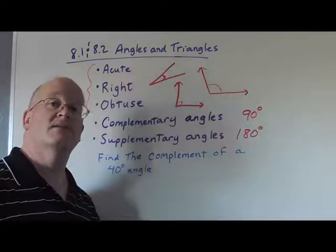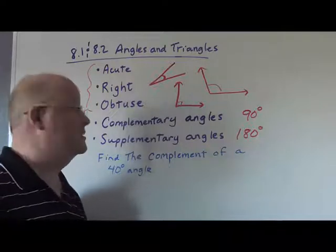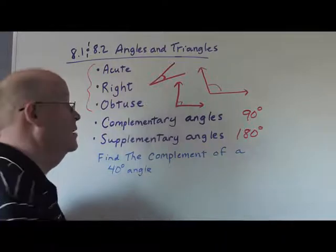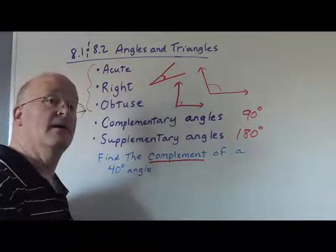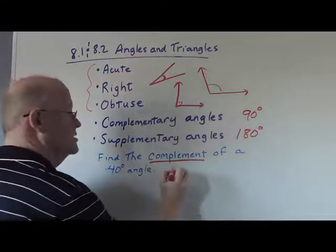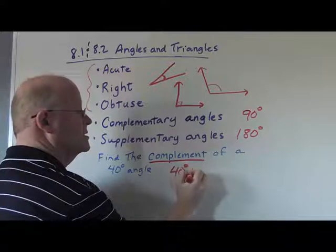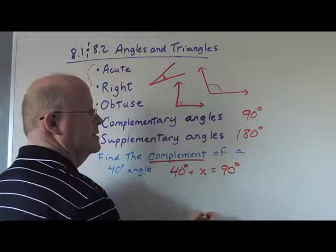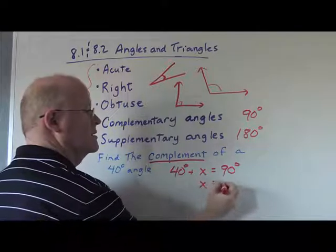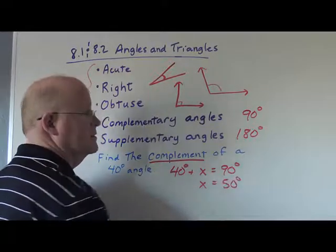Now if our directions say to find the complement of a 40 degree angle, basically you're saying complementary angles add up to 90 degrees. And so you're saying 40 degrees plus what is going to add up to 90 degrees? And so our answer is going to be 50 degrees.